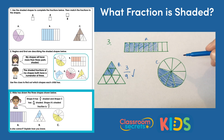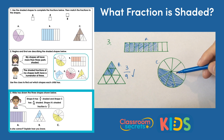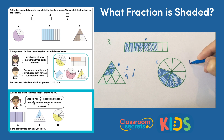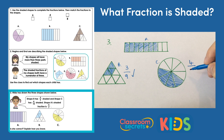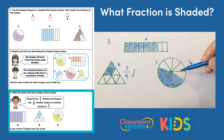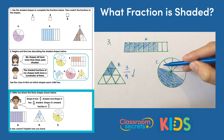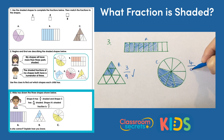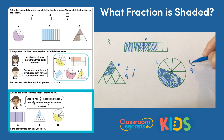Hilda also says shape c has four tenths shaded. Counting the shaded parts: one, two, three, four — so the numerator is four, and that's correct. She says ten parts make the whole, so let's check: one, two, three, four, five, six, seven, eight, nine. So actually Hilda has counted her parts wrong — there are only nine parts making up the whole, which makes the fraction four ninths.